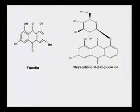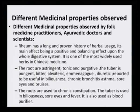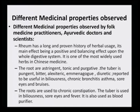Looking at simpler molecules, emodin and chrysophanol-8-beta-D-glucoside: one is an anthraquinone with a glucoside linkage and the other has only hydroxy and methyl groups. Rheum has a long and proven history of herbal usage, its main effect being a positive and balancing effect upon the whole digestive system. It is one of the most widely used herbs in Chinese medicine. Traditional Chinese medicine (TCM) also uses rheum as one of its main components.